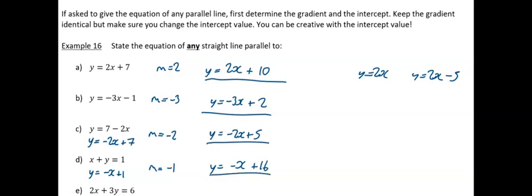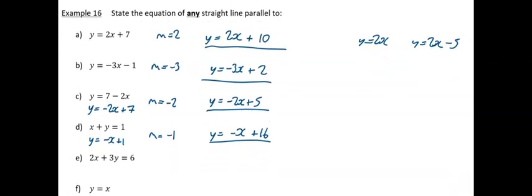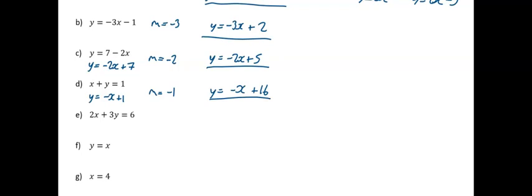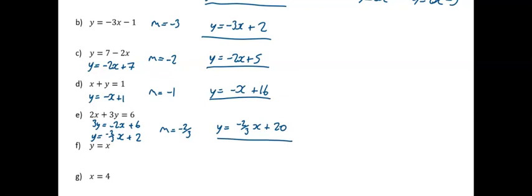For the next example, a bit more work is needed. Moving the 2x across gives 3y = −2x + 6, then dividing through by 3 gives y = −(2/3)x + 2. So m = −2/3, and a parallel line would be y = −(2/3)x + 20. For the following example, m = 1 since it's really 1x, so my parallel line is y = x + 4.